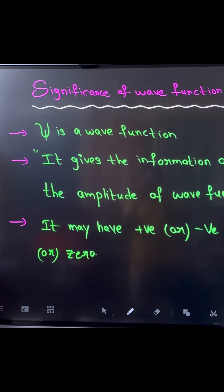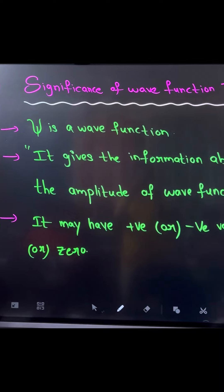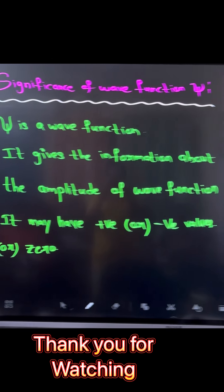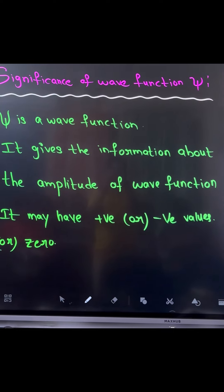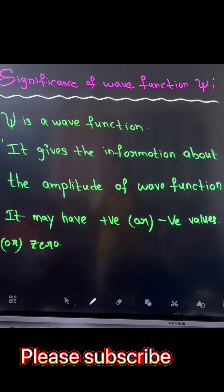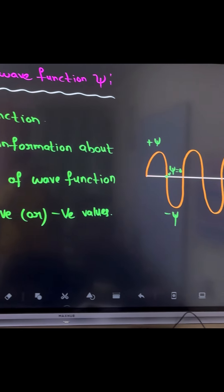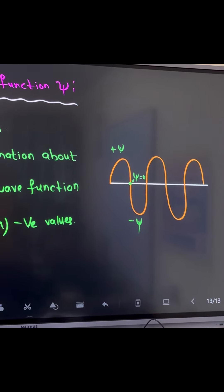Significance of wave function. Here, ψ is called a wave function. It gives the information about the amplitude of the wave function. It may have positive or negative values or zero. If the height of the wave is indicated with the plus side, the depth of the wave is indicated with the minus side, and the ellipse of the position is indicated with the ψ value.